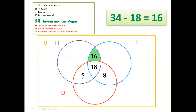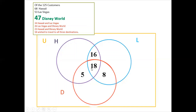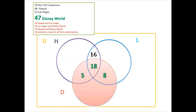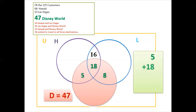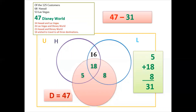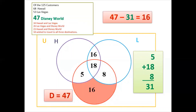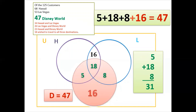So we have 18 plus 5 for Hawaii and Disney, totaling 23; Disney and Las Vegas totaling 26; Hawaii and Las Vegas totaling 34. Next, 47 want to go to Disney World. Inside the Disney circle we already have 5, 18, and 8 — a total of 31. To make it 47, we add 16.